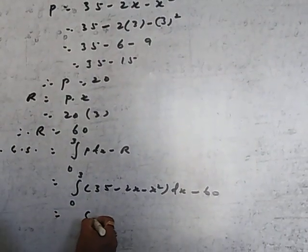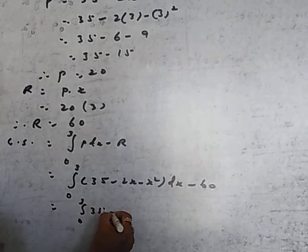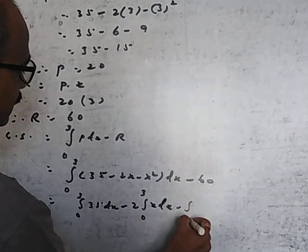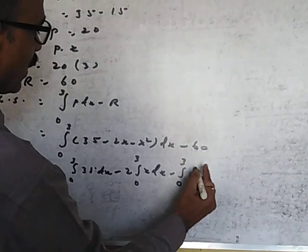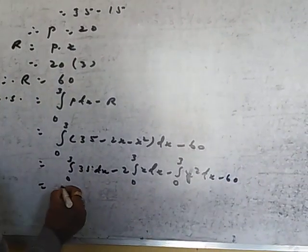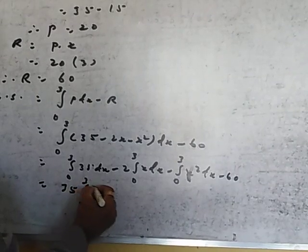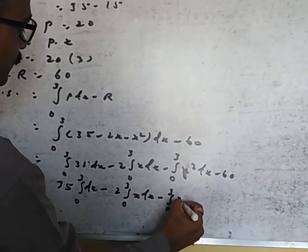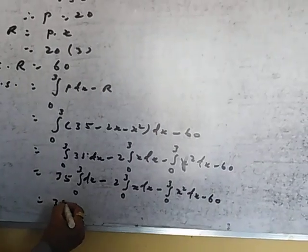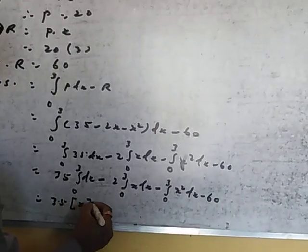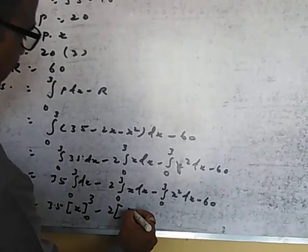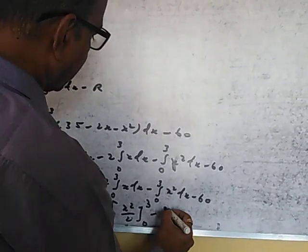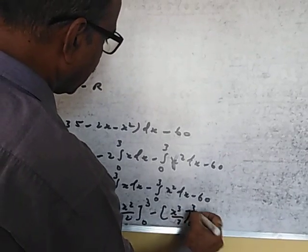Now I will solve this for you. So 35 integration 0 to 3 dX minus 2 integration 0 to 3 x dX minus integration 0 to 3 x square dX minus 60. Integrating: 35x from 0 to 3, minus 2 times x square by 2 from 0 to 3, minus x cube by 3 from 0 to 3, minus 60.